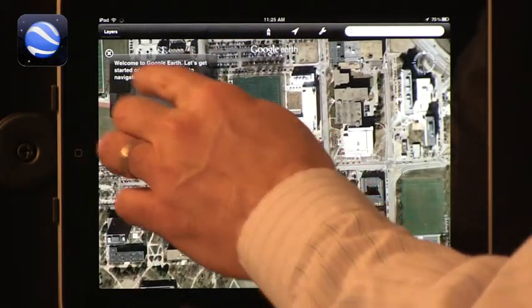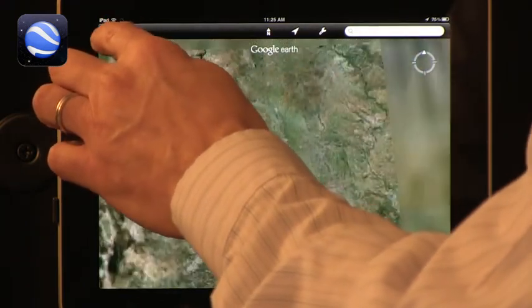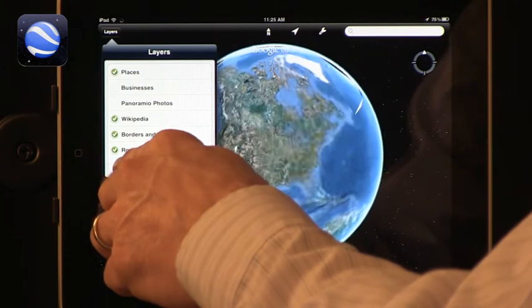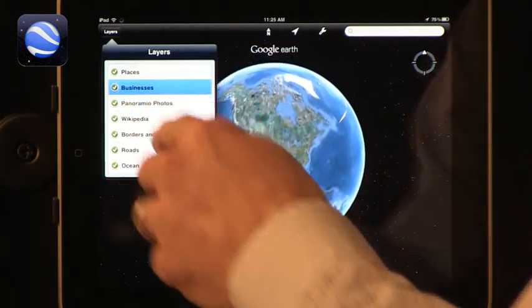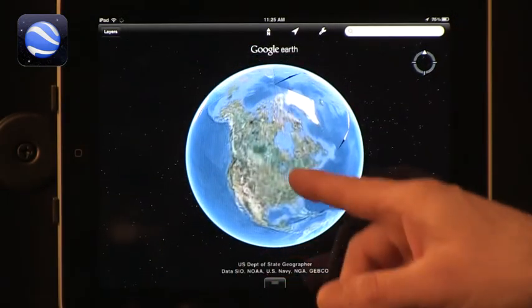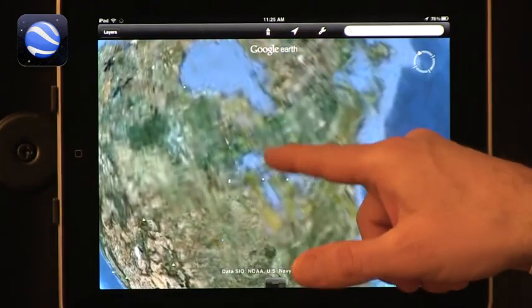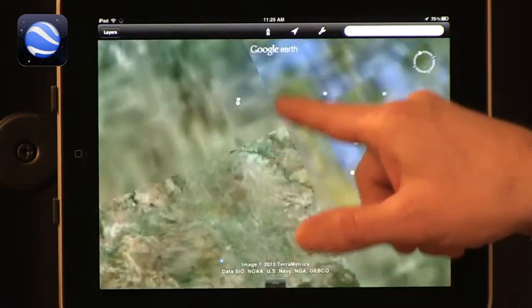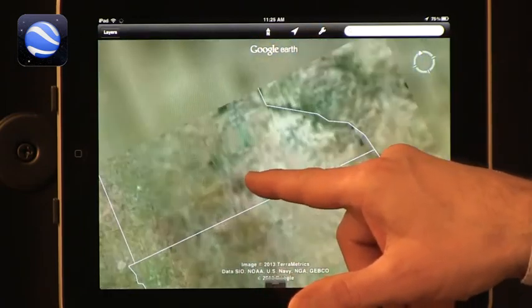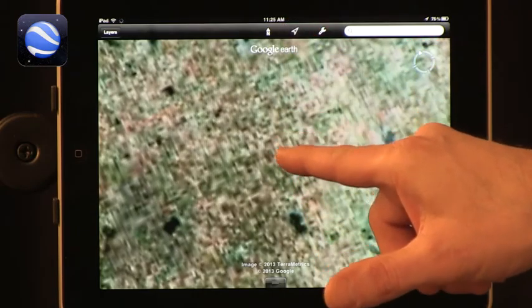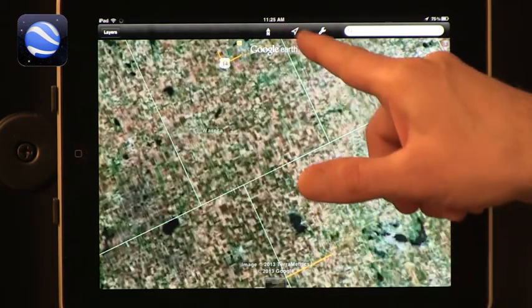Especially because in the modern version, the new version, you can add layers, especially photos, to Google Earth. So you can go specifically to an area. Let's go to where we are, or close to us at least.